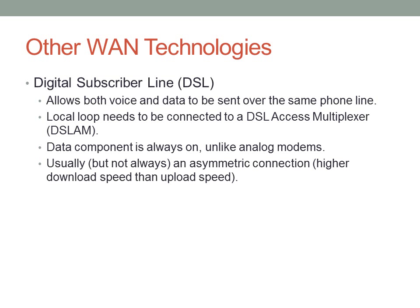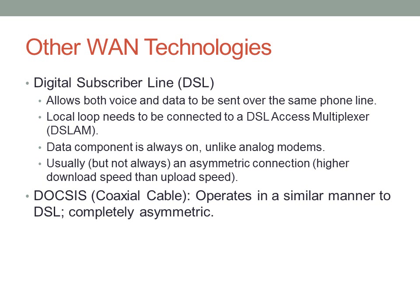Some other WAN technologies: Digital Subscriber Line, or DSL, allows both data and voice to be sent on the same line using a DSL Access Multiplexer. The data component is always on, unlike most analog modems. But normally the connection is asymmetric — you'll have a higher download speed than upload speed. There's also DOCSIS, which is probably what you're using if you're connected through a cable provider like Cox. It operates similarly to DSL, uses channels, and multiplexes between channels 3 and 4. It is completely asymmetric — there's no way to change that because of how DOCSIS is designed.